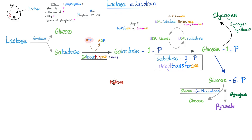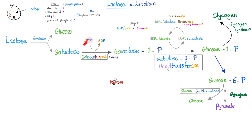Here is lactose — the sugar found in milk and dairy products. By the lactase enzyme, it gets digested into glucose and galactose. By galactokinase, the enzyme that adds phosphate, galactose becomes galactose-1-phosphate. Where did you get that phosphate from? From ATP — adenosine triphosphate. When you take one phosphate from adenosine triphosphate, it becomes adenosine diphosphate. The phosphate is attached to the first carbon of the hexose sugar.